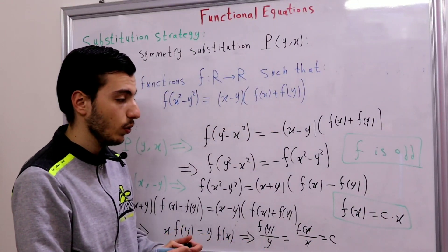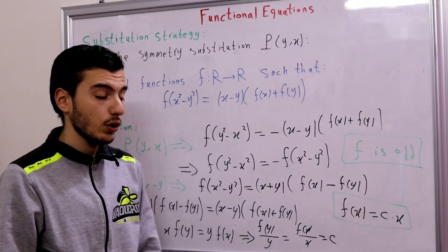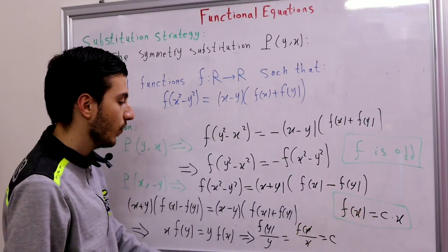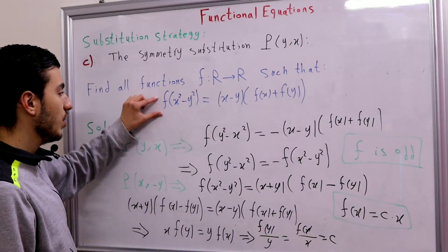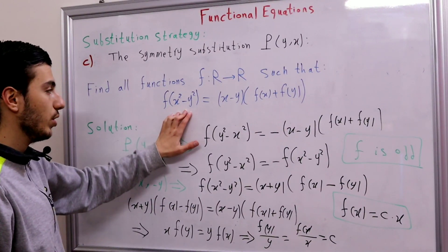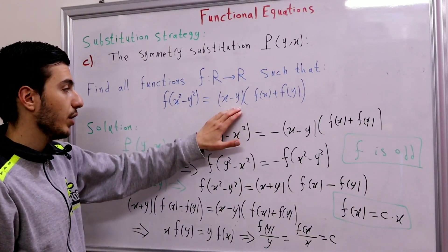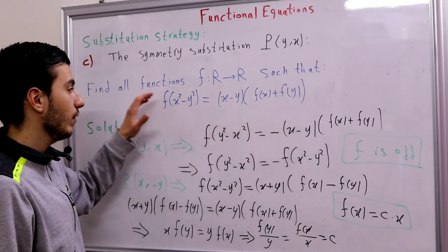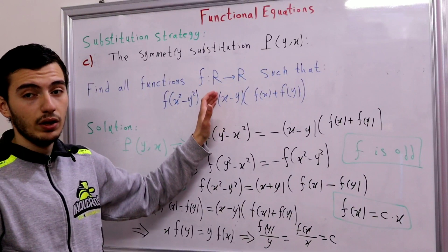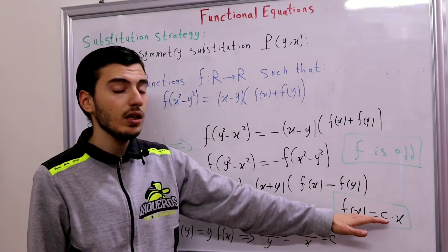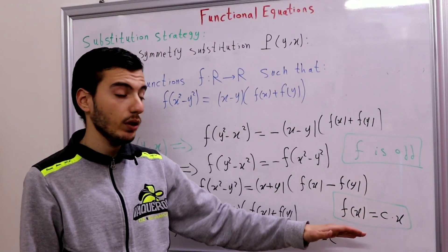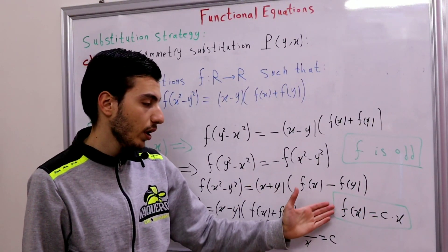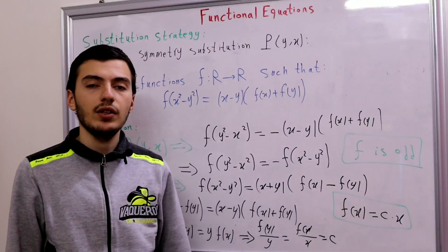So f(x) = cx. Let's substitute back into the original functional equation to verify: c(x² - y²) = (x - y)·c(x + y). We have c on both sides, and this holds true. So any real constant c works just fine, and our answer is f(x) = cx.